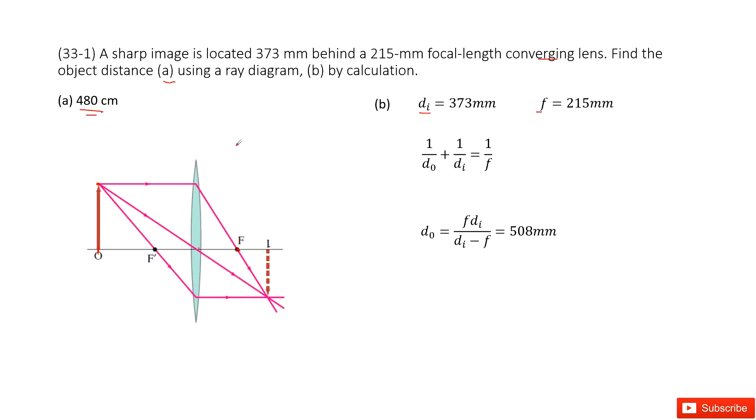The second method, we can do that by calculation. What we can consider is the thin lens equation, look like this one. In this equation, you can see D0 we don't know, but Di, image distance, is given. Focal length is given. We can convert this equation, get the function for D0. Input all the given quantities, get the answer.